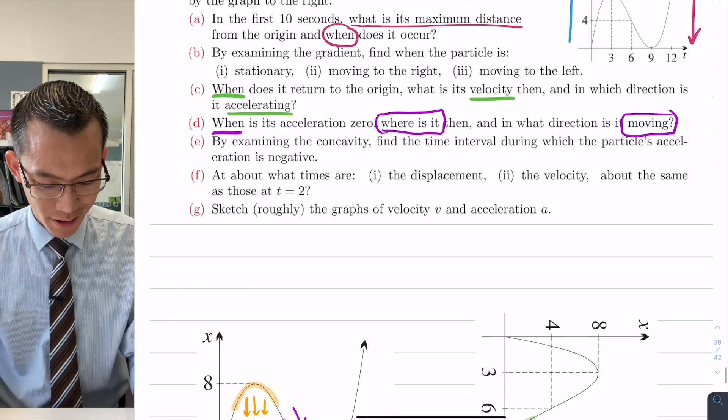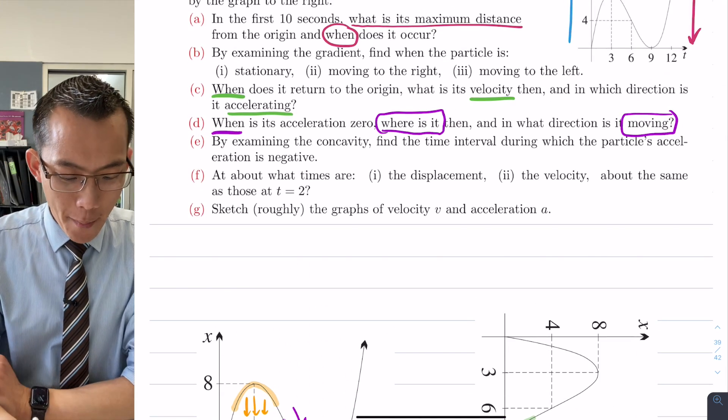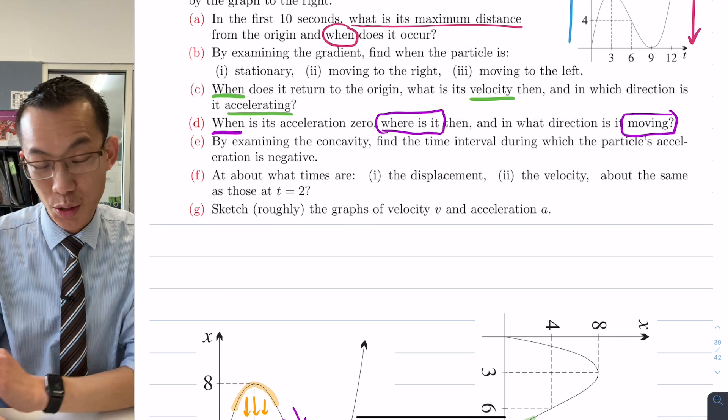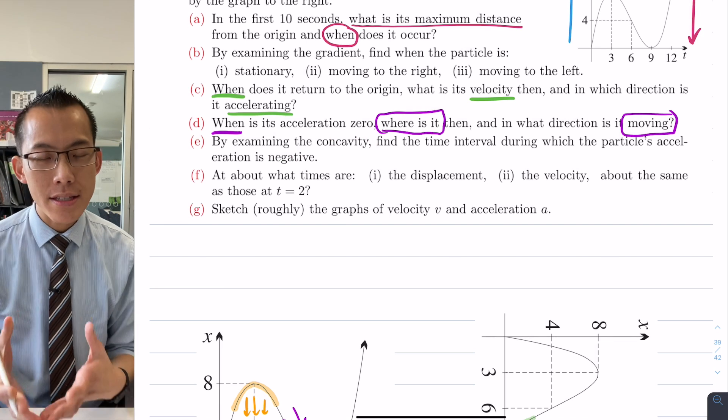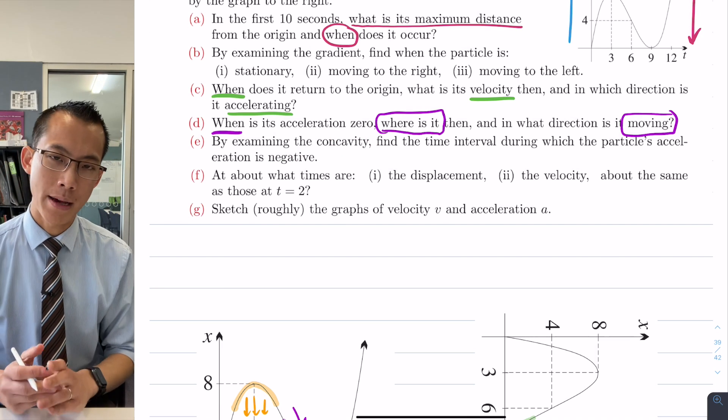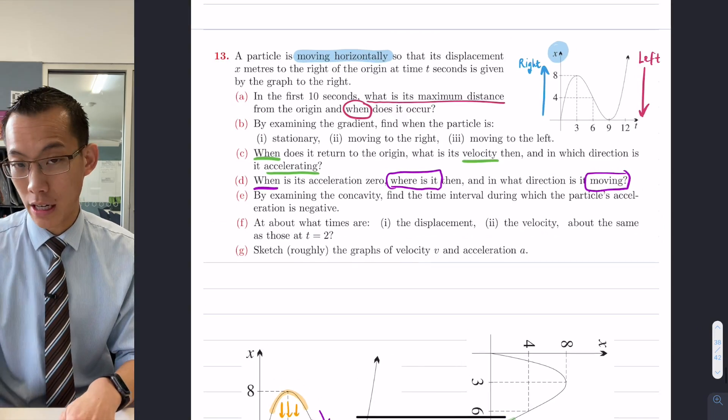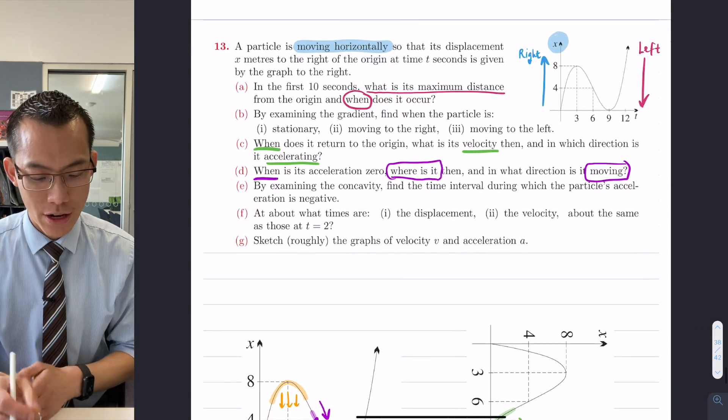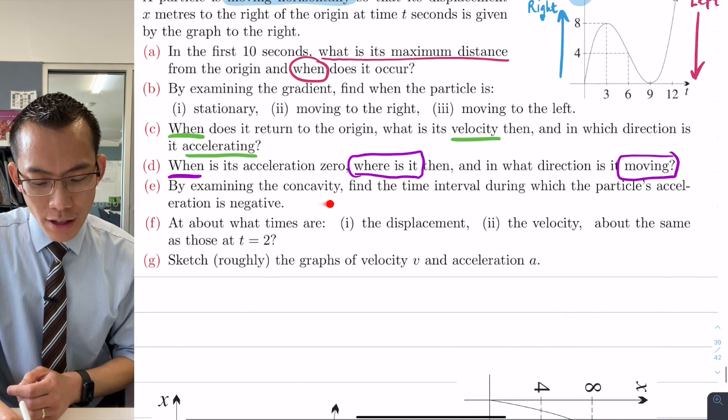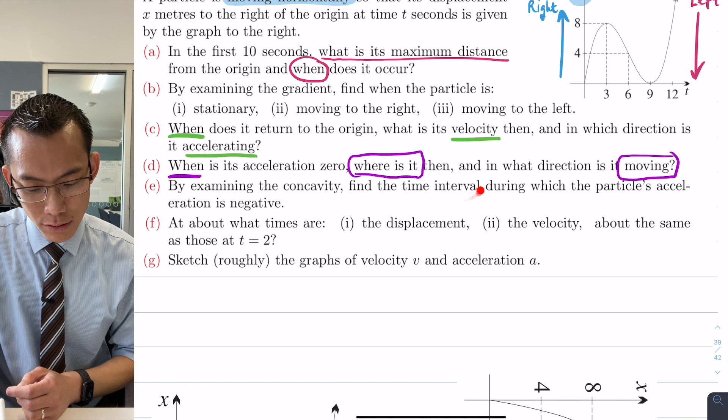So this is part D, we are now past halfway, let's have a look at E. By examining the concavity, find the time interval.